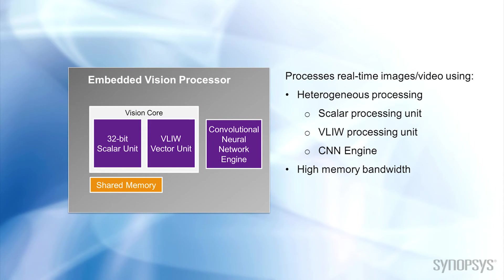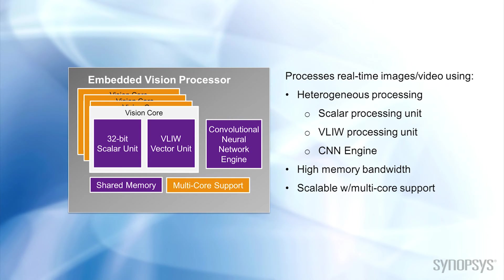Data movement is critical, so these units must be tightly coupled and support fast data transfers. Because vision processing requirements scale with the resolution or number of cameras, some vision processors have the capability of scaling when higher performance is needed. In this case, hardware and software support for high-performance multi-core processing is important.